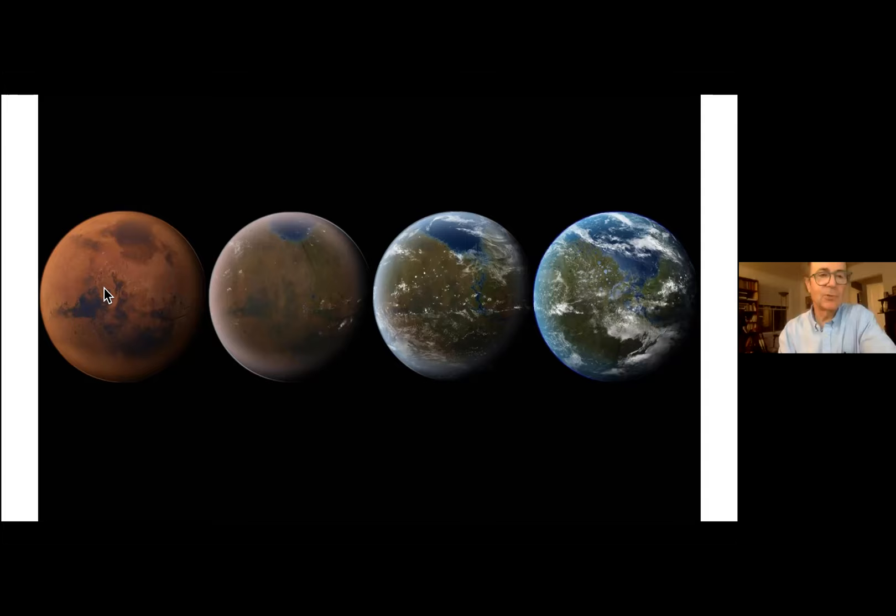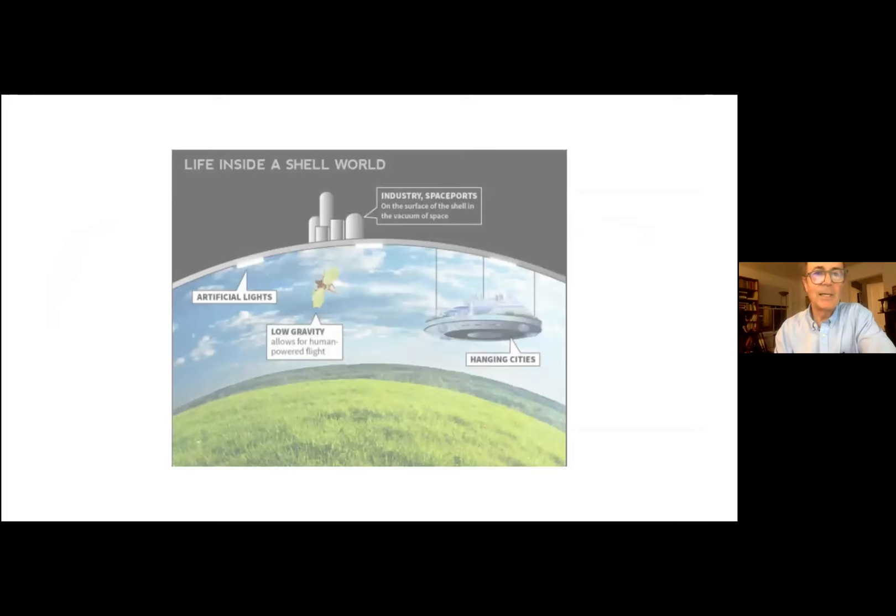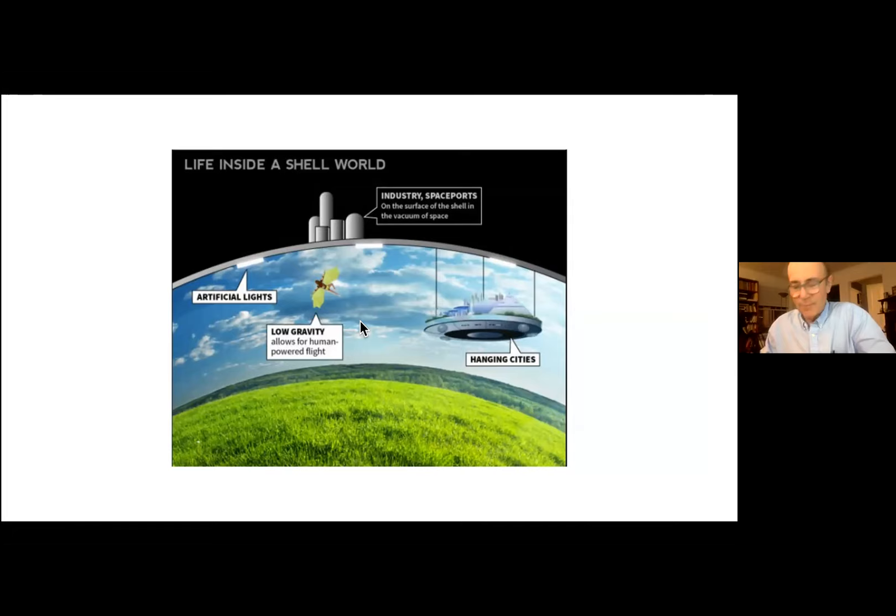This might be particularly relevant in view of the fact that mankind is busy changing the earth into a hostile environment by injecting enormous amounts of carbon dioxide and other greenhouse gases into the atmosphere. We may need to terraform earth itself. If you want to make a relatively small terraformed world, like an asteroid, you can imagine a shell. Of course, science fiction people have gone to town.